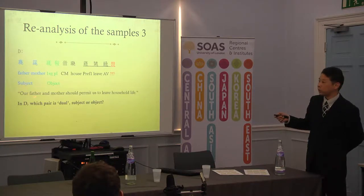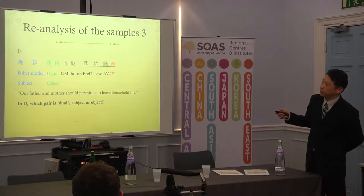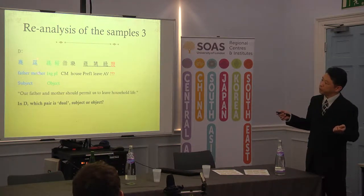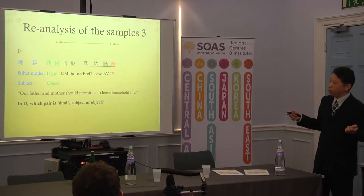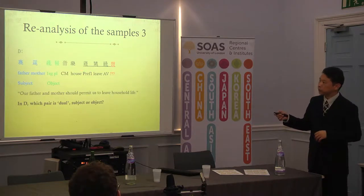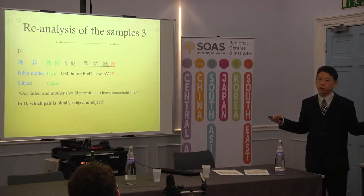The meaning of this sentence: our father and mother should permit us to leave our household bride. This blue font means subject and this green font indicates objects. But each pair is dual, so we can decide it. Father and mother are a pair. In my previous work, the samples given by Professor Nishida are, I think, a little weak.